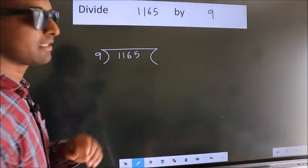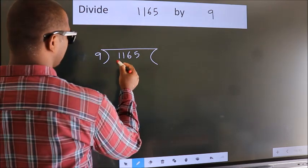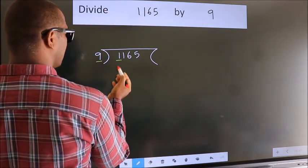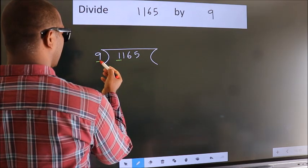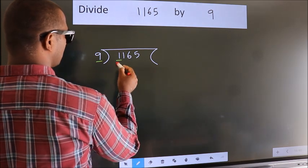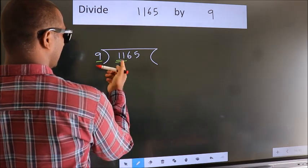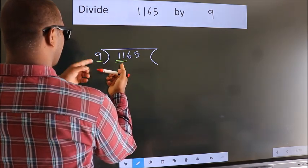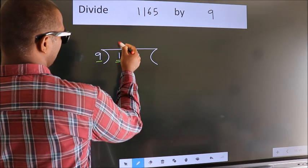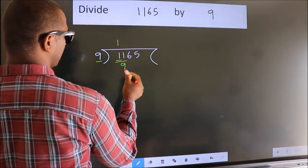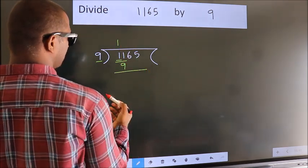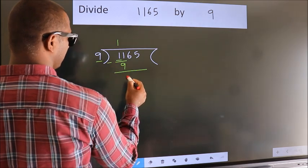Next, here we have 1, here 9. 1 is smaller than 9, so we should take two numbers: 11. A number close to 11 in the 9 table is 9 once 9, which is 9. Now we subtract and get 2.